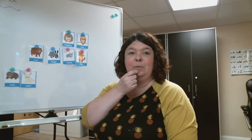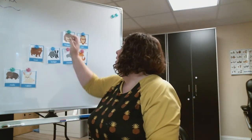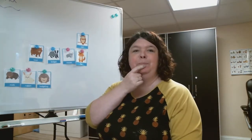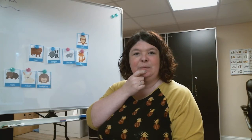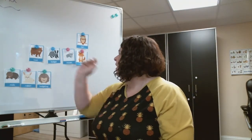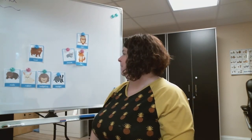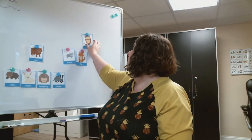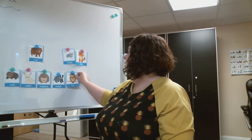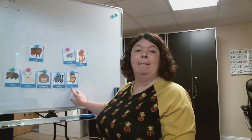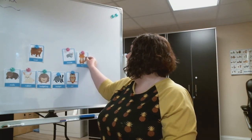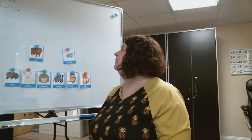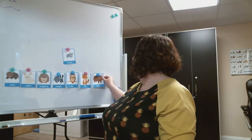Who was the next animal? The hedgehog? Who was the next animal? Was it the badger? What was the next animal? The owl. Who climbed into the mitten next? The fox. Who climbed into the mitten next? It was the bear.